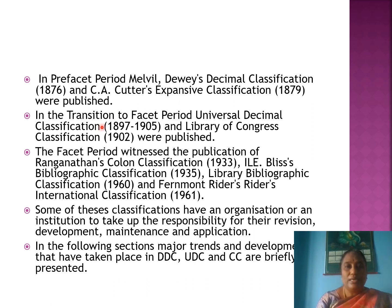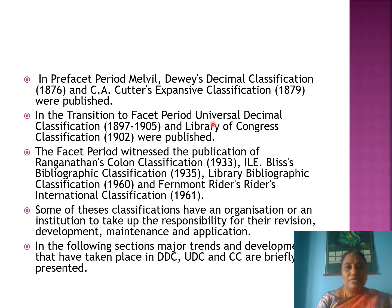In the second period — the transition to facet period — two more classification schemes were developed: the Universal Decimal Classification, published between 1897 and 1905, and the Library of Congress Classification, published in 1902. These two schemes represent the key developments of the second period.